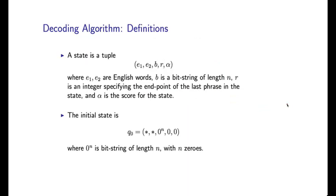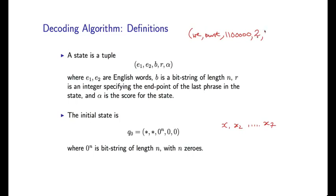A first key idea in this algorithm is going to be the idea of a state. A state is a 5-tuple. Here's an example: we might have a state with words "we must", for a sentence of length x1, x2, up to x7. The first two elements of this tuple are two words — "we must" — essentially corresponding to the last two words of a translation. b is going to be a bit string of the same length as the input sentence. r is going to be some integer, and alpha is going to be some score.